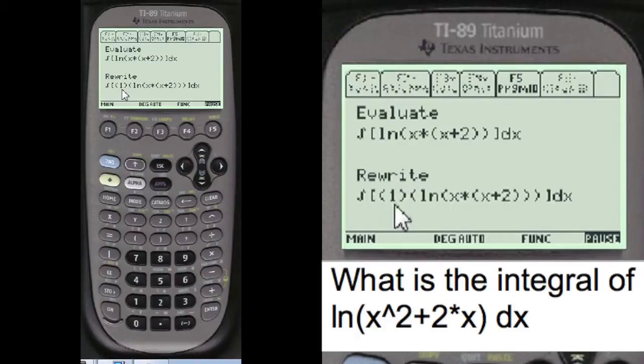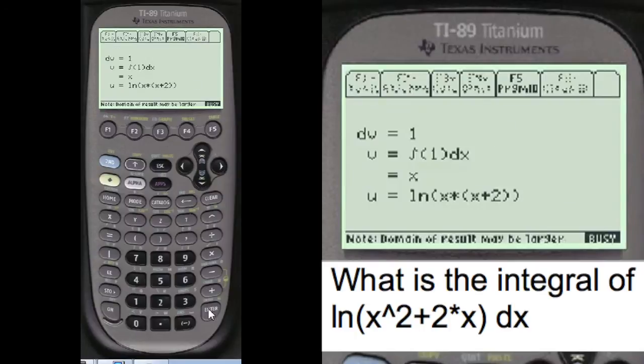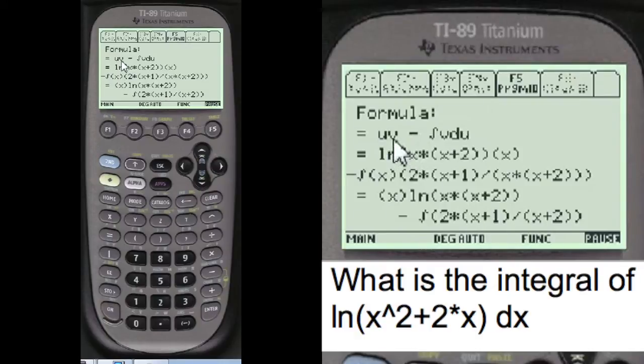So we're going to rewrite it, and we're going to put the 1 here, because when you integrate 1, you get x. So dv is 1, v equals integration of 1, and this answer is x, which you need for the formula. And here's the formula, uv minus integral of v.